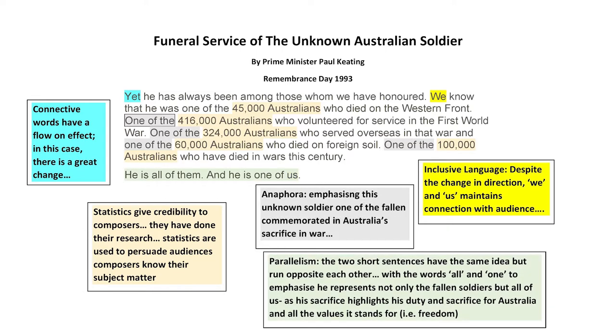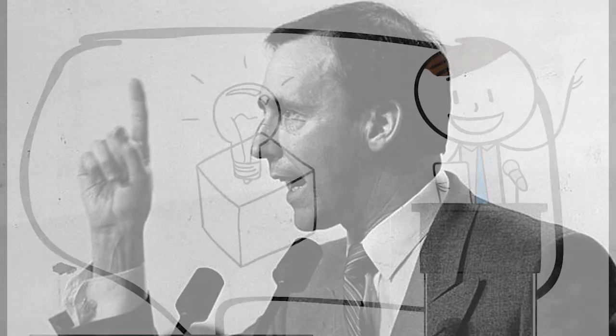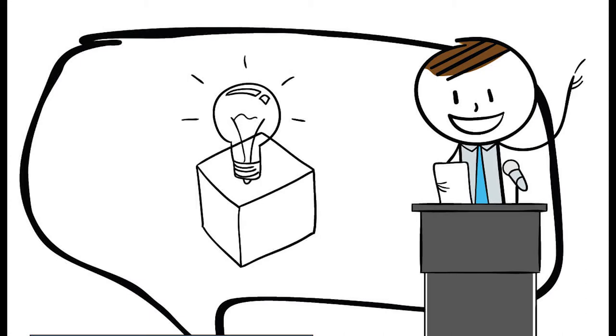Notice how the composer finishes the paragraph with another profound parallelism, using the words 'all' and 'one' to emphasize that he represents not only the fallen soldiers but all of us — all Australians — as his sacrifice highlights his duty to Australia and all the values Australia stands for, like freedom. So from the first two paragraphs, you can see that everything has been well thought out. Nothing is random. The anaphora, the repetition, the inclusive language all work together to grab our attention and to persuade us to keep listening. But persuasive speeches are not just about clever techniques — the speaker wishes to persuade the audience into thinking or acting differently, so there has to be important ideas holding the speech together.